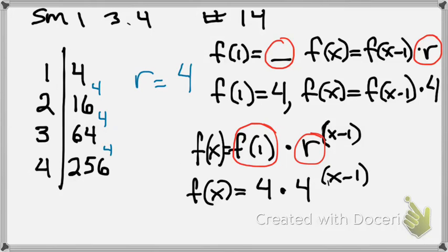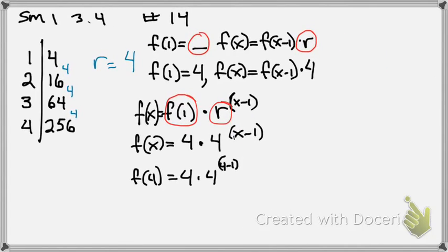Let's see if it works. On my fourth term, right? So F of 4 should be 4 times 4 to the 4 minus 1 power. You okay with that? So now, what is 4 minus 1? 3. So 4 times 4 to the 3rd power should equal 256, because that's what F of 4 is, right?